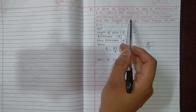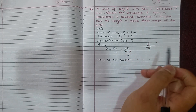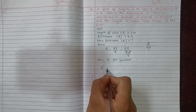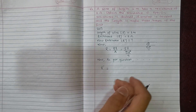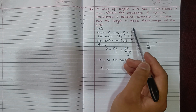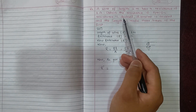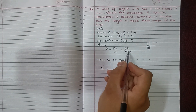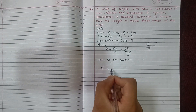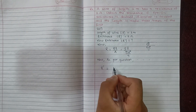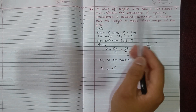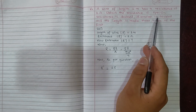As per the question, the specific resistance is doubled so row becomes 2 row, the diameter is doubled so d becomes 2d, and the length is made three times so L becomes 3L. Substituting into R equals row L by pi d squared by 4.